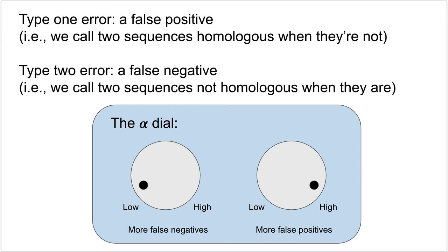If you turn the dial the other way and set your alpha really high — say 0.1 — that means you're going to have more false positives, because a higher p-value such as 0.08 is going to result in you calling those sequences homologous with one another.